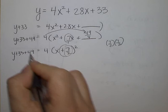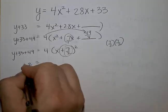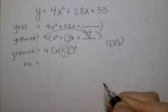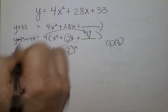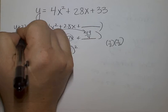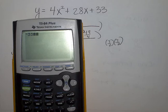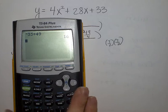33 and 49 is? Oh, thank you. So negative 33 and positive 49 is positive 16.